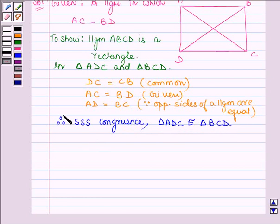This further implies that angle ADC equals angle BCD. That is, these two angles are equal. Let this be equation number 1. Now, in a parallelogram, opposite sides are parallel, so AD is parallel to BC.